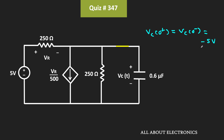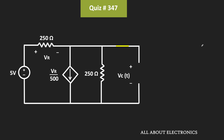Now let us find the voltage across the capacitor at t = infinity. In steady state, the capacitor acts as an open circuit. So this open circuit voltage is the voltage across the capacitor at t = infinity. For simplicity, let's call this voltage Va.